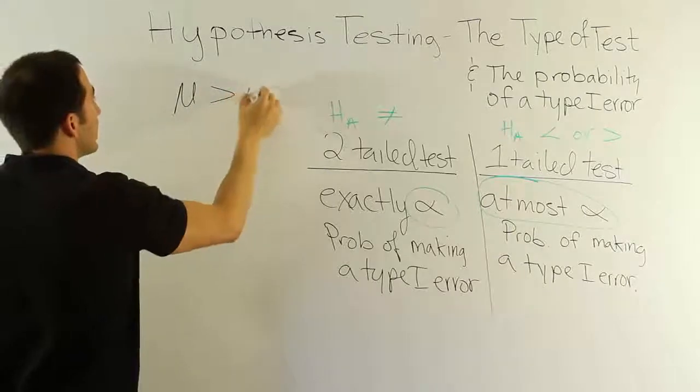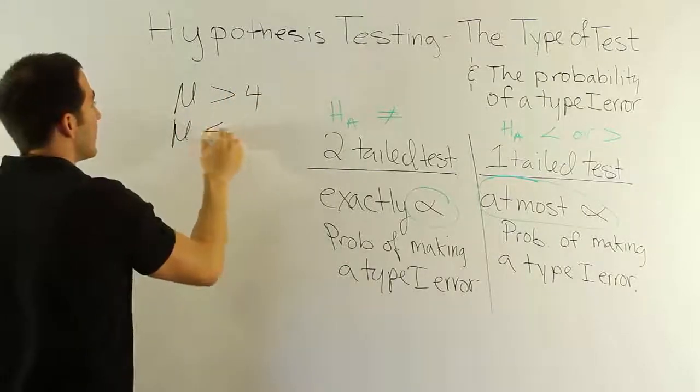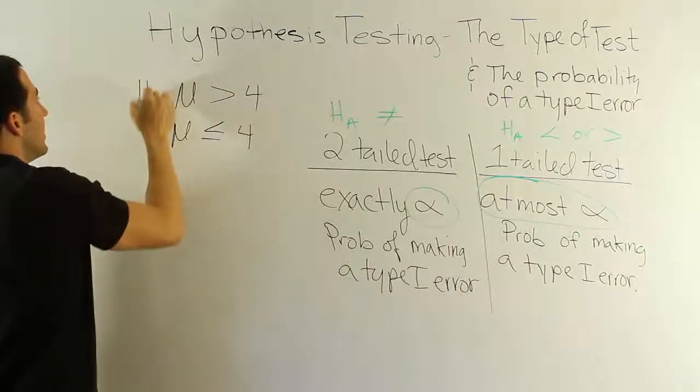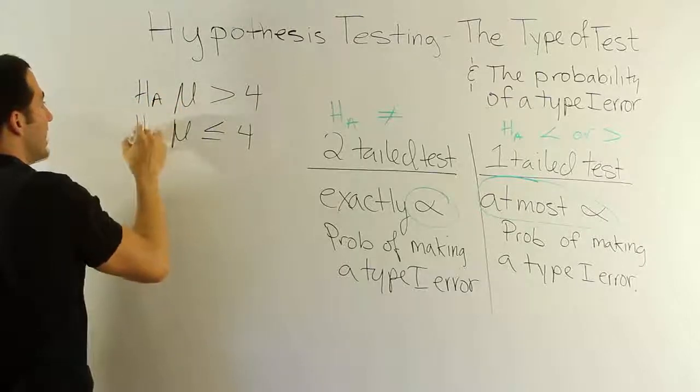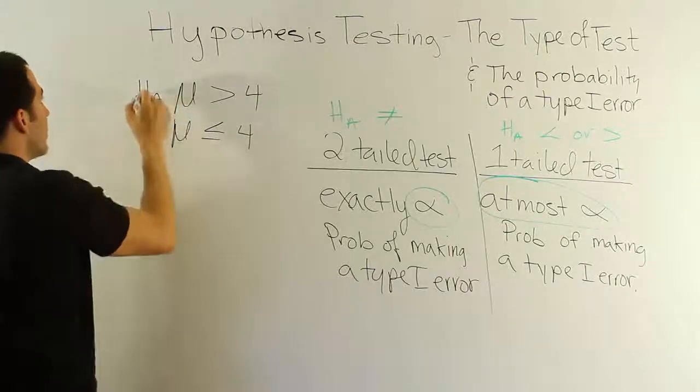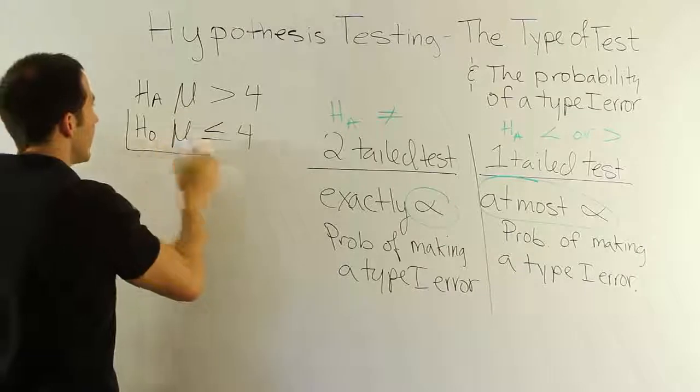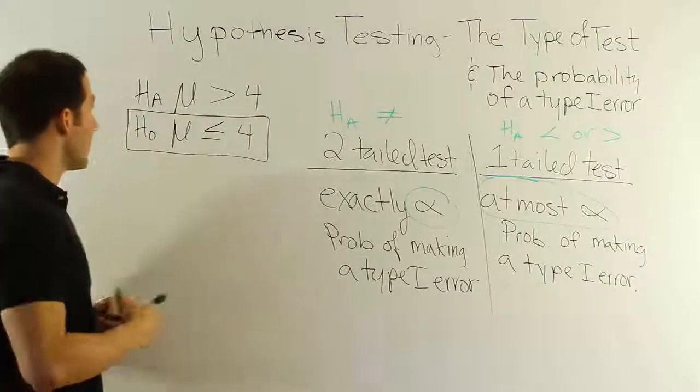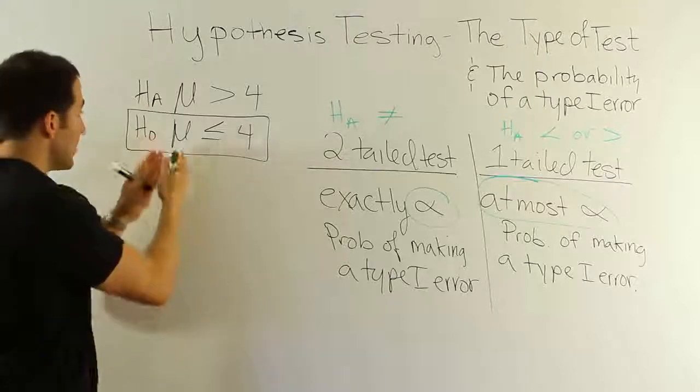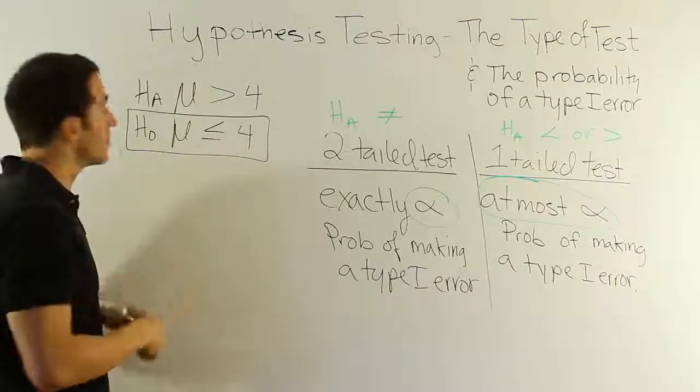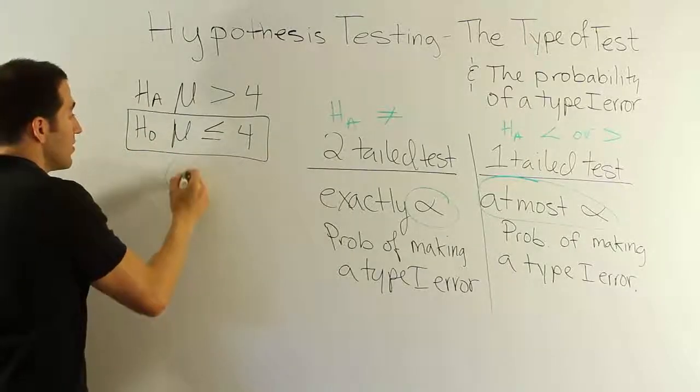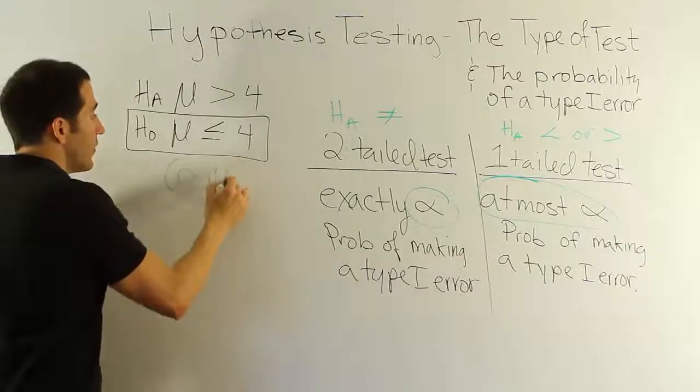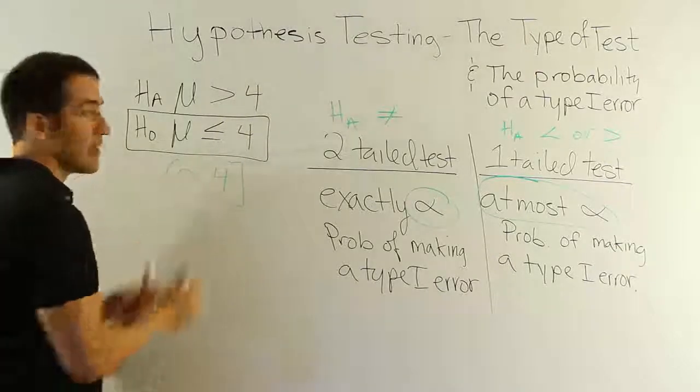Mean is greater than 4 versus the mean is less than or equal to 4. So this would be our HA and this would be our H0, because this one has the equality. And we're always testing H0. Well, we said H0 could take on several values and still be true. In other words, the mean could take on several values and still be true. In other words, the mean here could be anything from 0 to 4 inclusive. That would make this true.